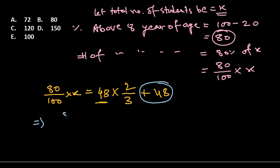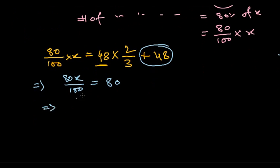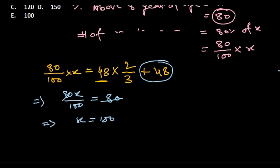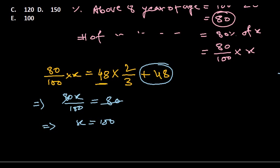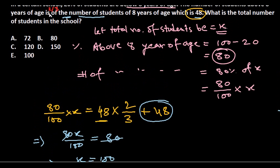Once we add everything, we get the equation: 80x/100 = 32 + 48 = 80. We can then simplify: x = 100. So the total number of students is 100.